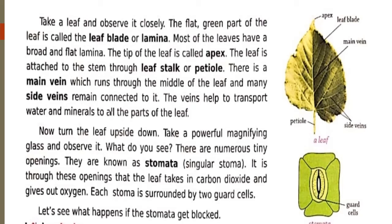Now, turn the leaf upside down. Take a powerful magnifying glass and observe it. What do you see? You can see tiny little opening pores called stomata. It is through these openings that the leaf takes in carbon dioxide and gives out oxygen. Each stomata is surrounded by two guard cells. Let us learn more about how stomata can get blocked.